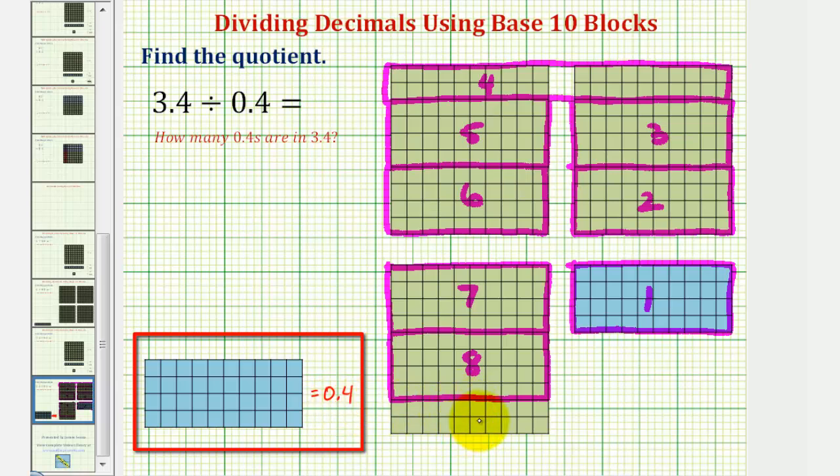Which means we have two fourths or half a copy of 0.4 here. So these two longs represent half a copy of 0.4, and one half is equivalent to five tenths or 0.5 using decimal notation.